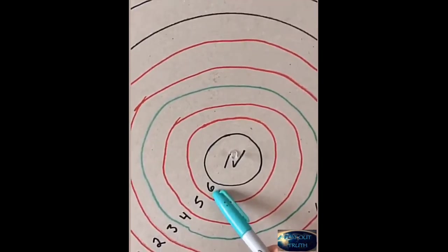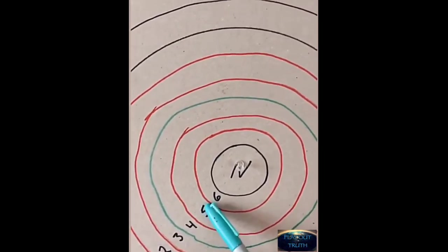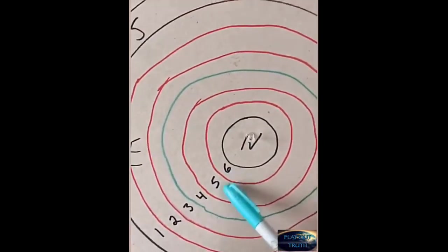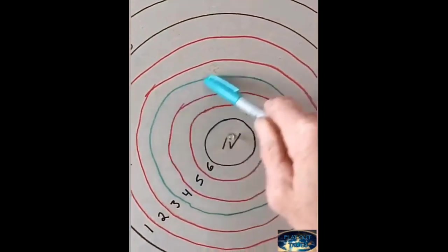And then from portal five back to portal four and then the nights get longer. The nights start getting longer because the sun is moving back out in its circuit, it's going back out to its winter solstice.